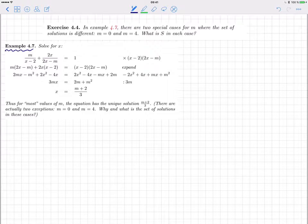But there is a little remark here that there are two exceptions, two special values of M where there is not a single unique solution. So what's left to show is why these two special values and also what is the set of solutions in these cases.